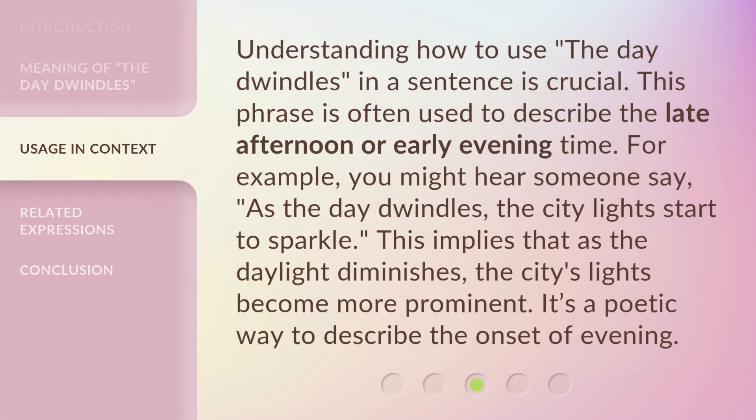Understanding how to use the day dwindles in a sentence is crucial. This phrase is often used to describe the late afternoon or early evening time. For example, you might hear someone say, as the day dwindles, the city lights start to sparkle. This implies that as the daylight diminishes, the city's lights become more prominent. It's a poetic way to describe the onset of evening.